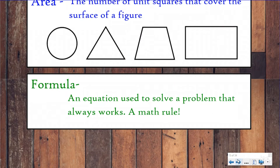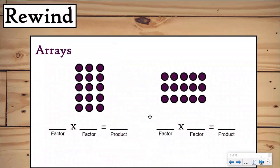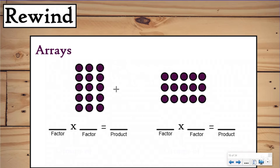Before we do that we need to hit the rewind button — rewinding back to when you first started to multiply. One of the first strategies you learned to multiply with was probably an array. So here we have two different arrays, and an array has columns and rows. You use this array to help you solve a multiplication problem, and when you first started you probably counted by ones: one, two, three, four, five, six. You had to know the two factors you were supposed to be multiplying.